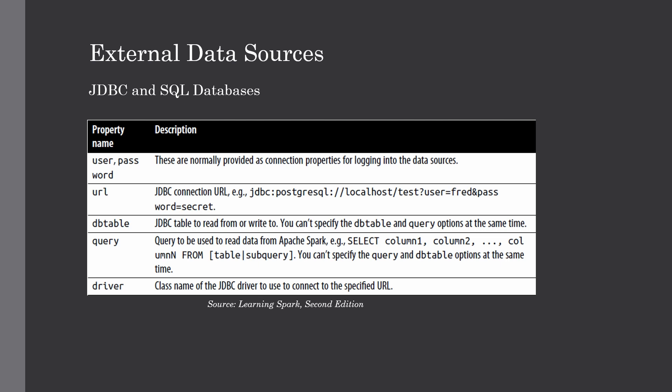For PostgreSQL, you provide the username, password, and port number in the connection string. Other required properties include the DB table — which is the JDBC table for reading and writing data — and the query, which is a SQL query for reading data from Spark. Note that you cannot specify both query and DB table at the same time. Finally, the driver property specifies the class name of the JDBC driver for connecting to the specific URL.